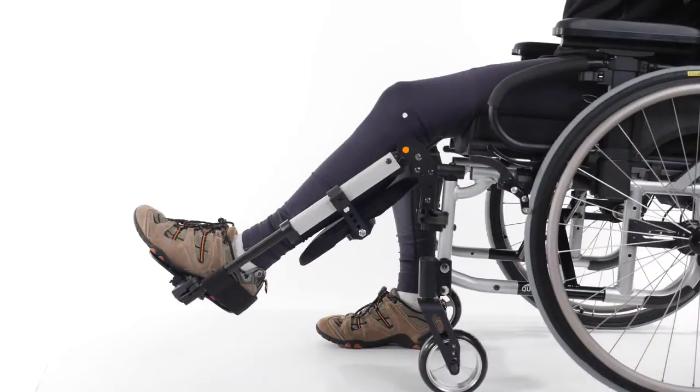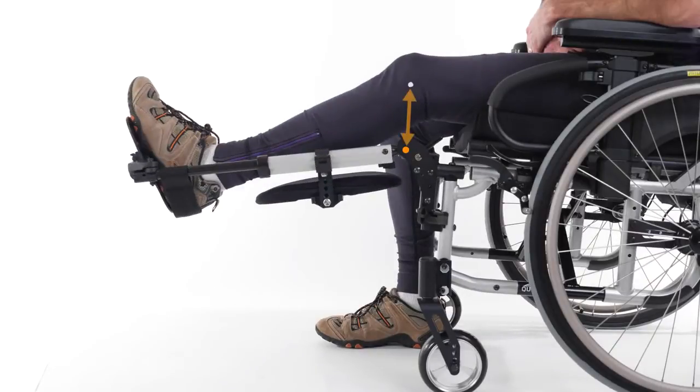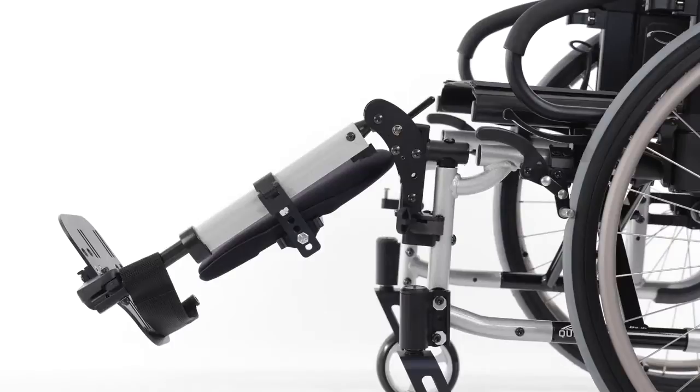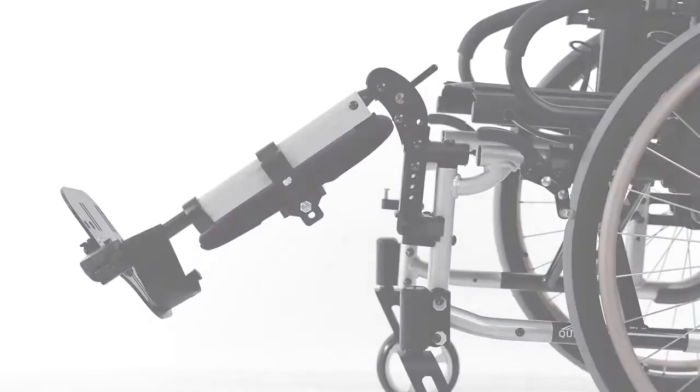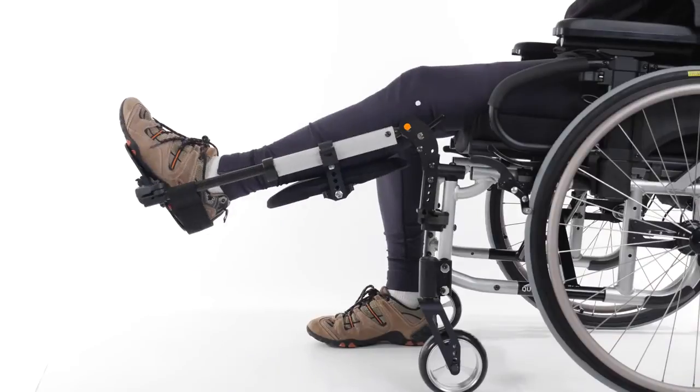When the leg rest pivot point and the knee pivot point are misaligned, this happens. But when you adjust the alignment of the leg rest to better match the knee's pivot point, the leg rest can elevate without overly lifting the knee.